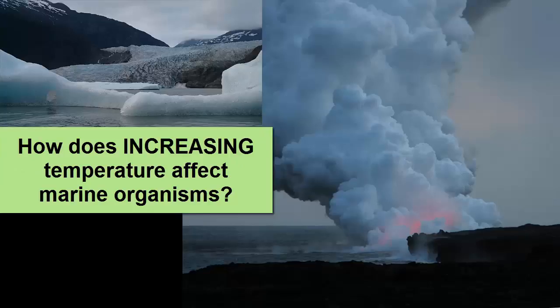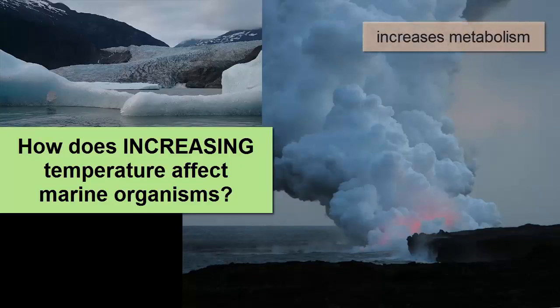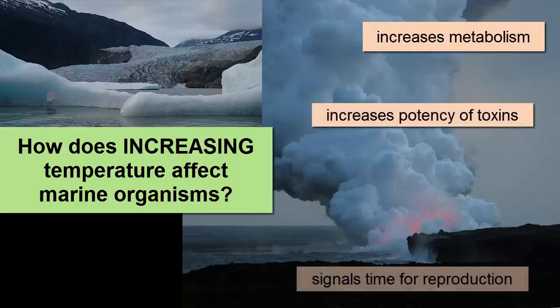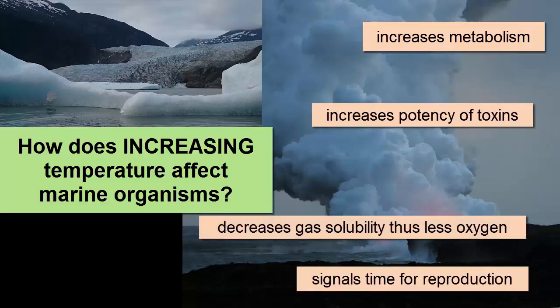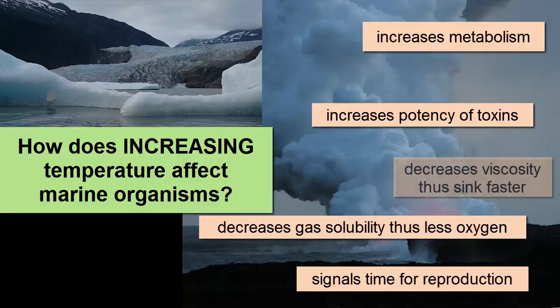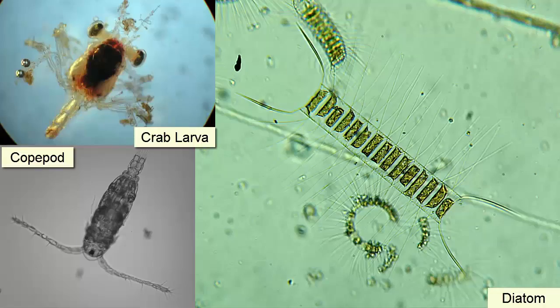Increasing temperatures can trigger more than just migration or death for those who can't migrate — heat makes almost all chemical reactions happen faster, increases the toxicity of pollutants in the water, and can signal spawning. Increasing temperature also decreases gas solubility, meaning there is less oxygen in the water for respiration. It also decreases viscosity, which means plankton will have a harder time staying afloat and need to find new ways to increase their surface area, like growing new appendages, spines, hairs, or forming chains together.